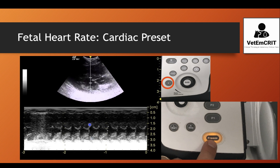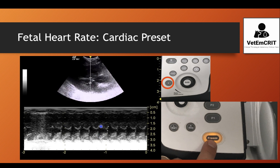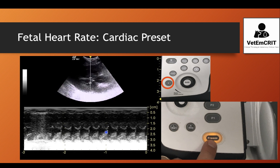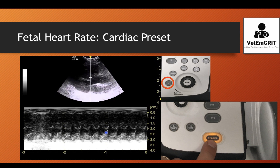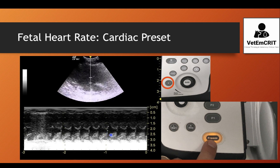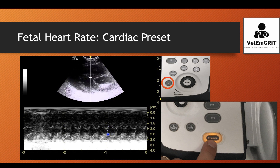By looking at the still image in M-mode, you should be able to differentiate between systole and diastole. During systole, the left ventricle of the fetus will contract and the lumen between the two walls of the left ventricle will be diminished, as opposed to diastole when the left ventricle is relaxed and the lumen will be enlarged in its diameter.